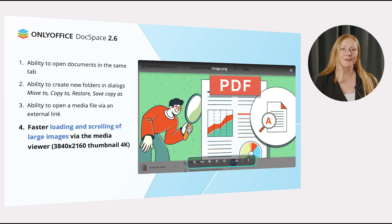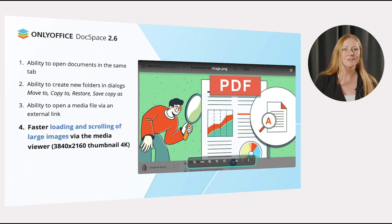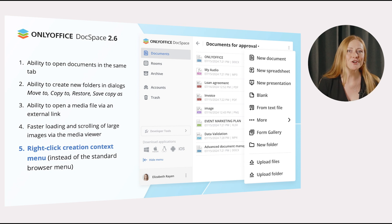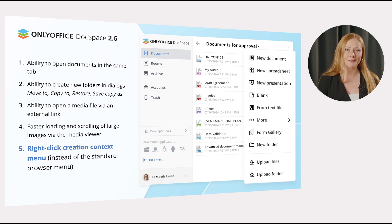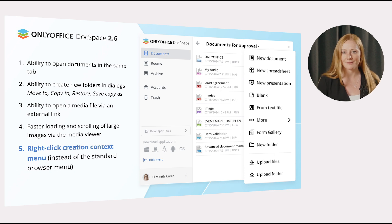Next update: faster loading and scrolling of large images via the media viewer, thanks to using thumbnails in 4K. And a new create context menu, which is now available instead of the standard browser menu by right-clicking the mouse within DocSpace sections.